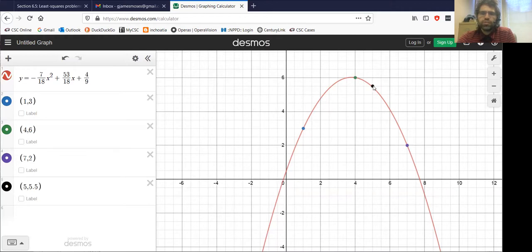This point doesn't quite pass through, but it's certainly very near the parabola. And if a vector of values is in the column space, then the parabola passes exactly through all of the points.